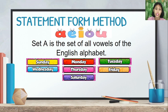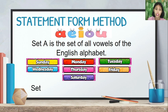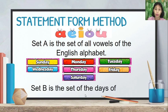Next, we have Sunday, Monday, Tuesday, Wednesday, Thursday, Friday, and Saturday — the days of the week. We name this as Set B. So in statement form: 'Set B is the set of the days of the week.'